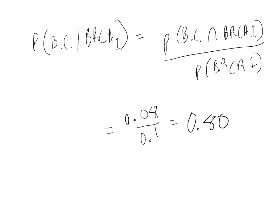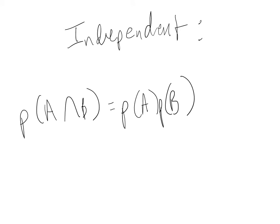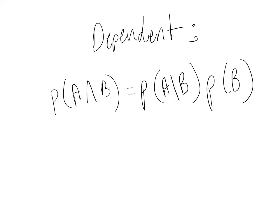Remember that when two events were independent and we were interested in their intersection, we used the formula: probability of A times probability of B. When the two events are dependent, we make a simple adjustment: instead of the probability of A times the probability of B, we use the probability of A given B times the probability of B.